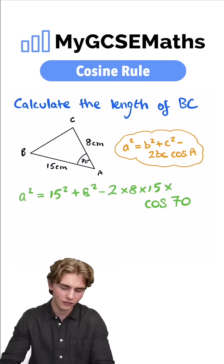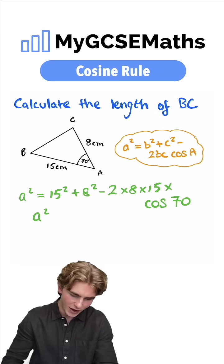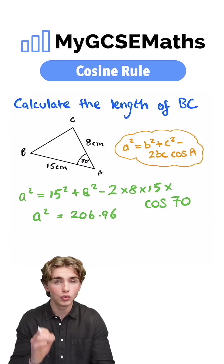Now that we have this we can plug it into our calculator. We get a squared equals 206.96 to two decimal places.